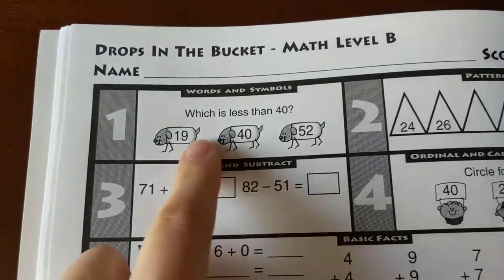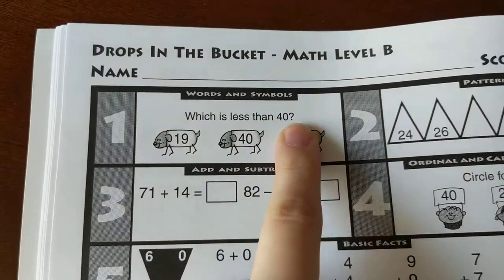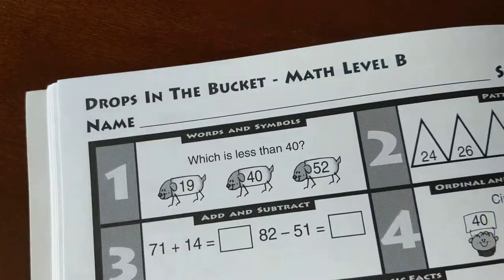Here's our bucket paper. Number one, which is less than 40? Circle which one is less than 40.